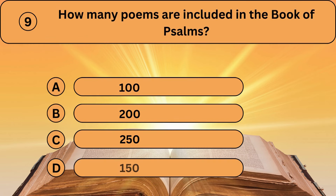Question nine. How many poems are included in the book of Psalms? A. 100. B. 200. C. 250. D. 150.